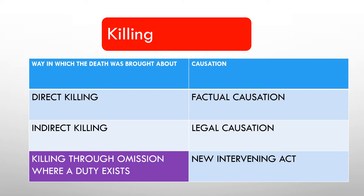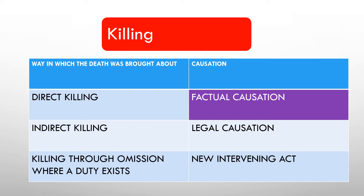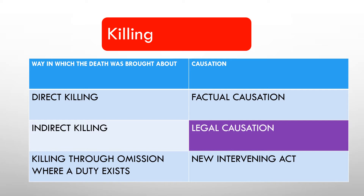In every one of those statements I've mentioned causation, which is why I've grouped them together — they're inextricably linked. The death needs to be brought about and caused. For factual causation, apply the but-for test: but for the actions of the defendant, would the victim have died? For legal causation, ask: is there more than a minimal cause? Kimsey tells us there needs to be more than a slight or trifling link.